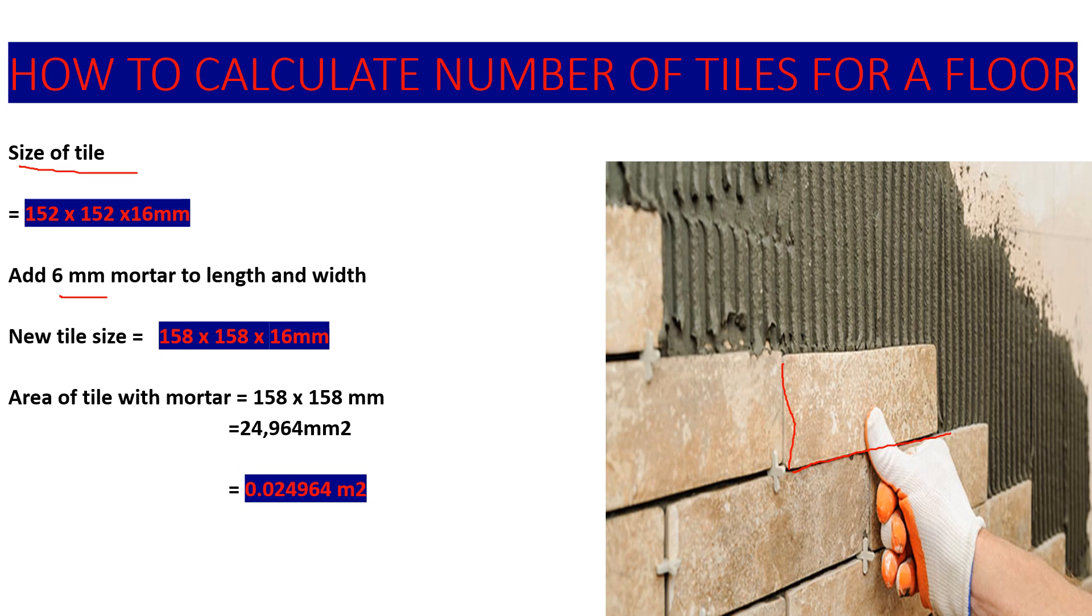Now, area of the tile with the mortar will be 158 by 158. If you calculate that one, it's giving us 0.024964 square meters. So that is the area of tile with mortar. Once you have the area of tile with mortar and you know your floor area where you want to lay your tiles, it will be easier for you to calculate the number of tiles.